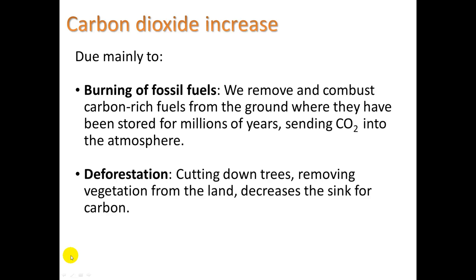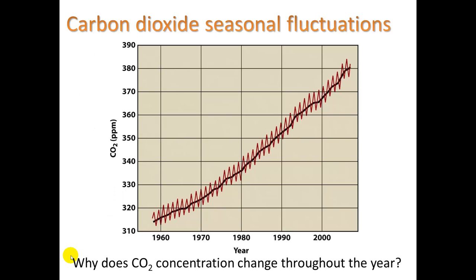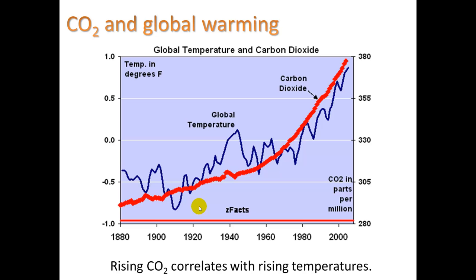And deforestation. Cutting down trees, removing vegetation from the land. This decreases the sink for carbon. If you don't think this has a real effect, check out this graph. Every year, we are measuring fluctuations in carbon dioxide levels at this particular station in Hawaii. And what season do you think would have the CO2 at a peak? I hope you recognize that that would be in winter, when the sun is lowest, so you're not getting as much photosynthesis. In the summer, you have more sunlight, you're getting more photosynthesis, and that helps absorb CO2 from the atmosphere as the plants turn it into sugar and grow.